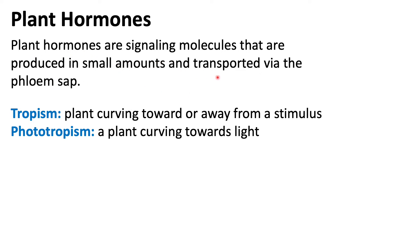Plant hormones are signaling molecules that are produced in small amounts and transported via the phloem sap. Hormones are always produced in small amounts because we only need a small amount to produce the desired change. In plants, there are two main types of vascular tissue: the xylem and the phloem. The xylem transports water from the roots to the shoots, whereas the phloem transports sugars and hormones bidirectionally — from roots to shoots or shoots to roots.